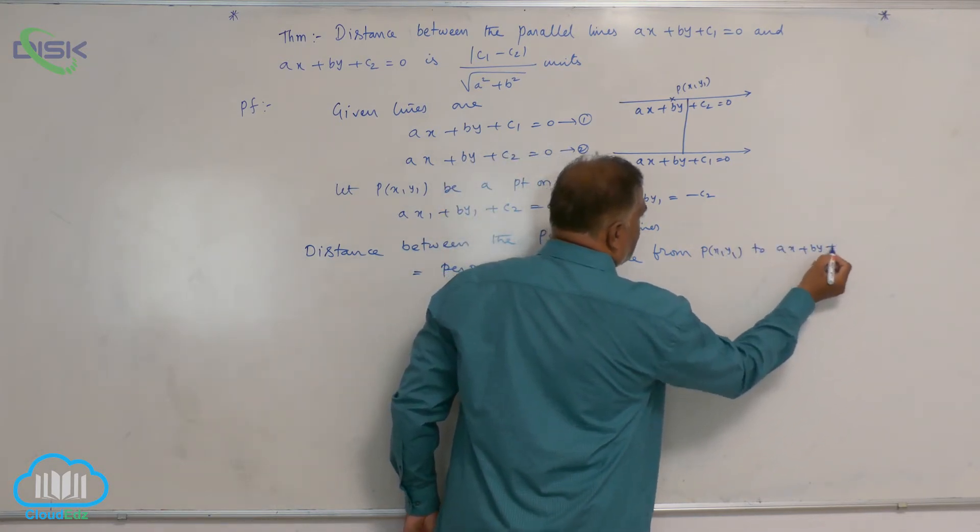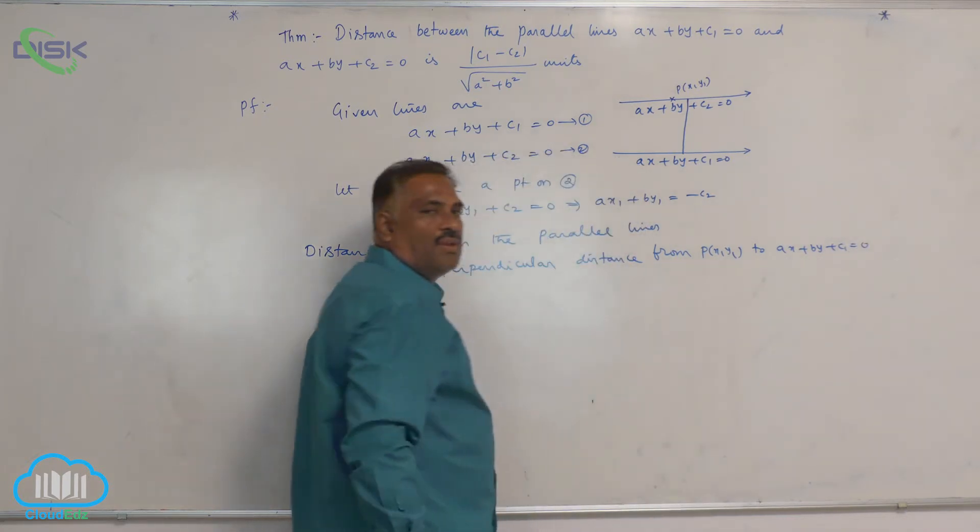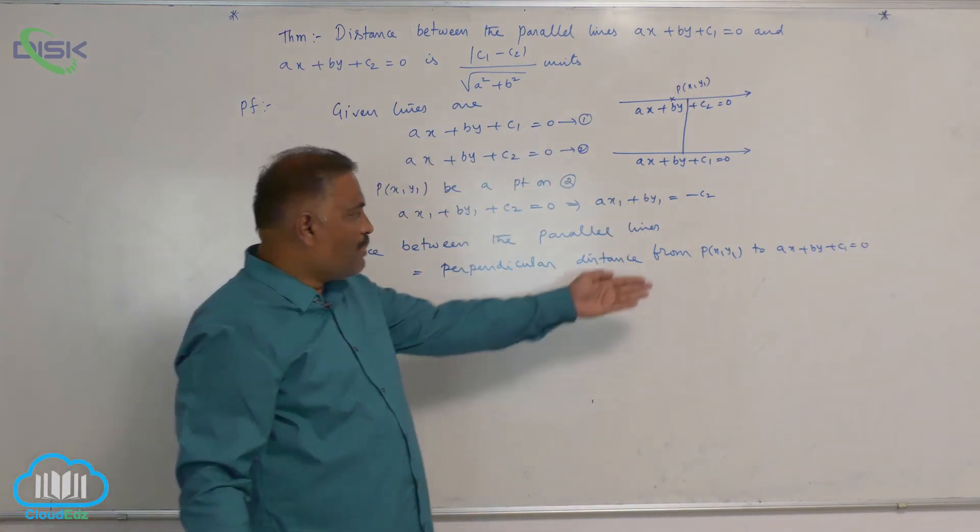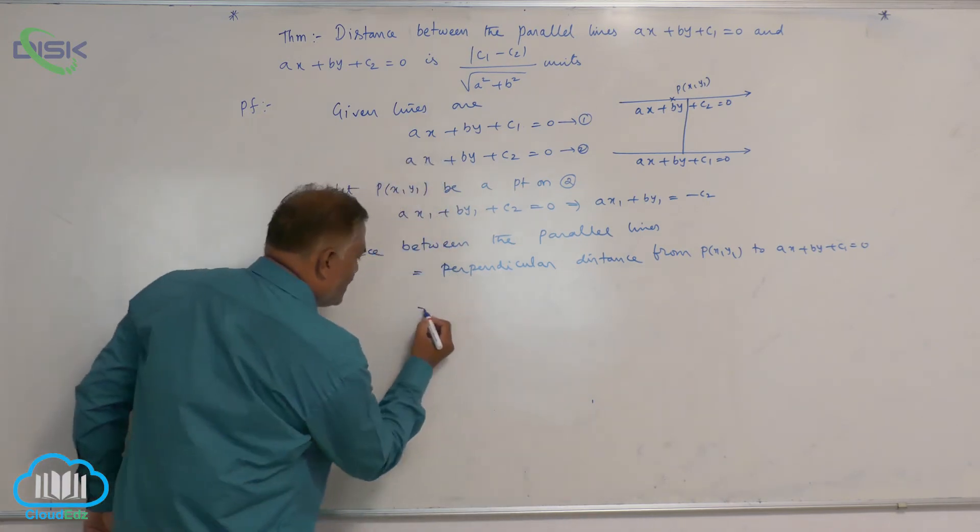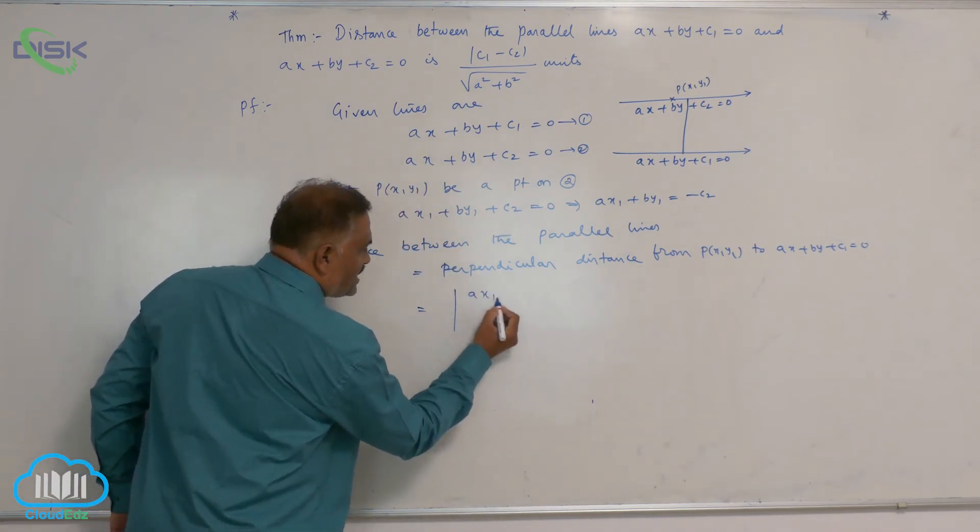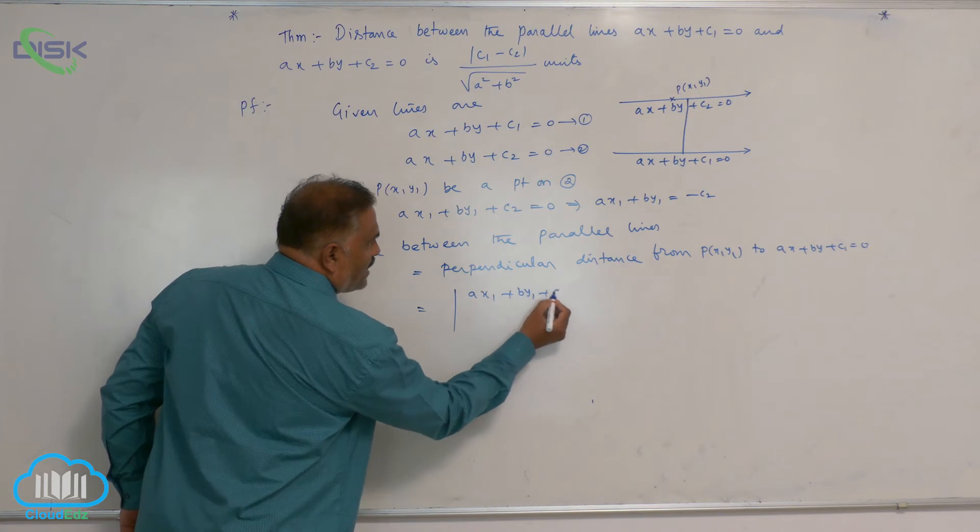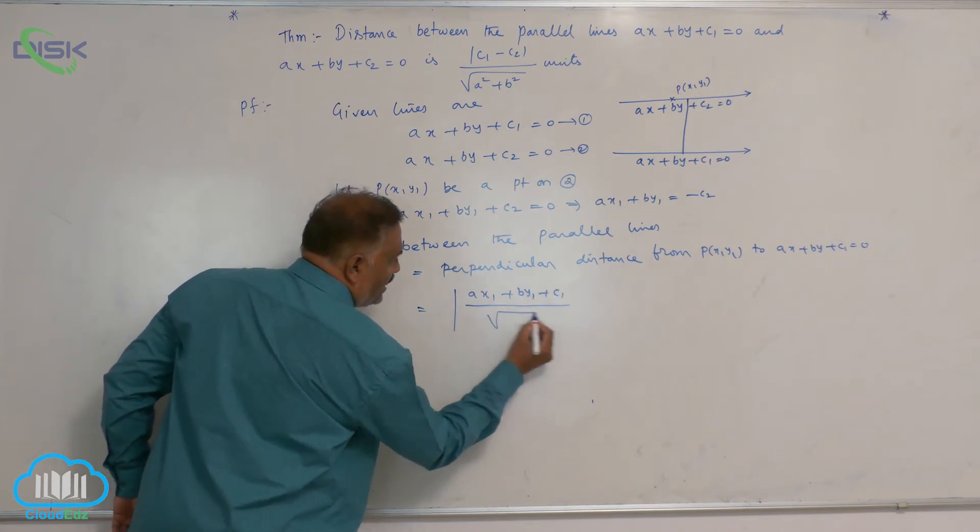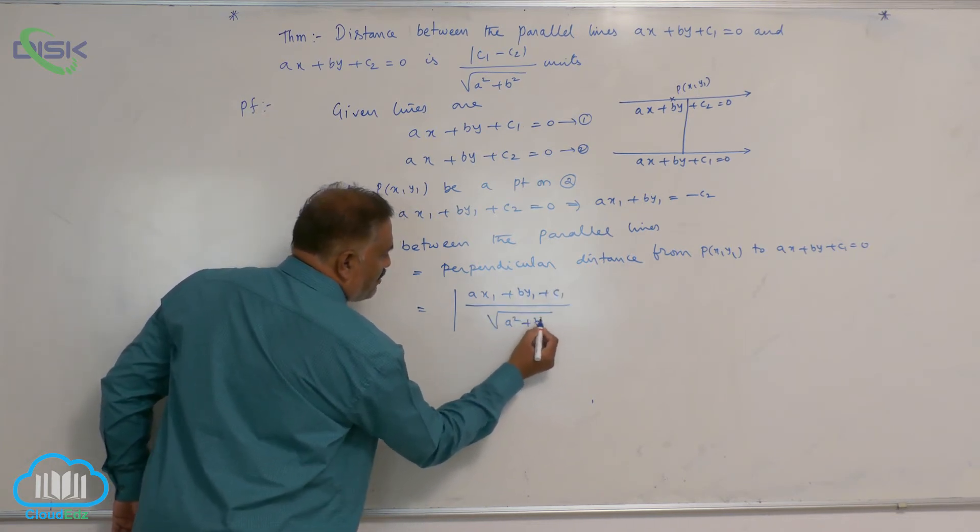It is modulus AX1 plus BY1 plus C1 divided by square root of A square plus B square.